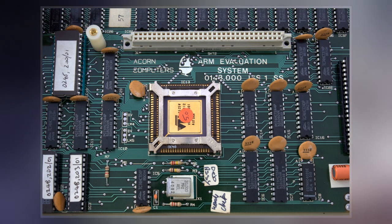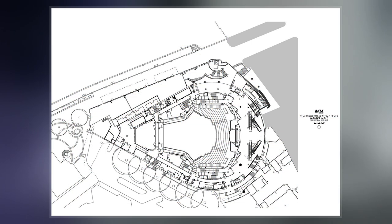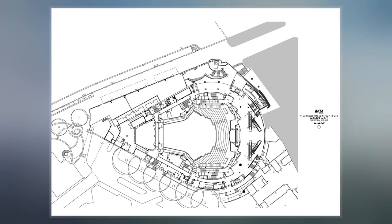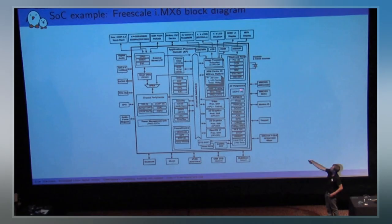ARM Holdings develops the architecture and licenses it to other companies who design their own products that implement one of those architectures, including systems on chips and systems on modules that incorporate memory, interfaces, radios, etc.